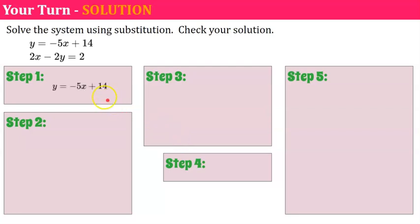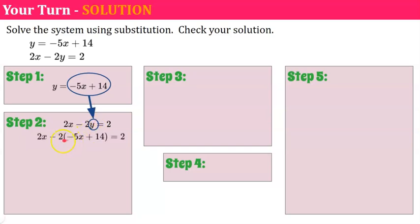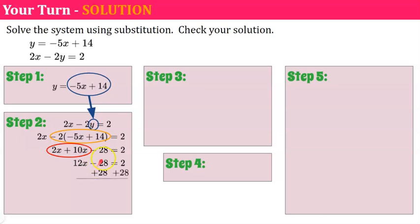Welcome back. Step one: I'll use the first equation because it's solved for y — y equals negative 5x plus 14. Step two: write down the second equation and replace y with negative 5x plus 14, using parentheses since it's a multiplication. Distribute: negative 2 times negative 5x is positive 10x, and negative 2 times 14 is negative 28. Combine like terms: 2x and 10x are 12x. Add 28 to each side to get 12x equals 30.